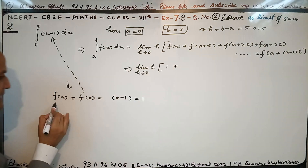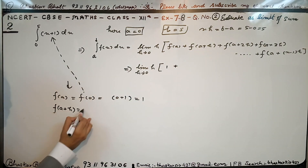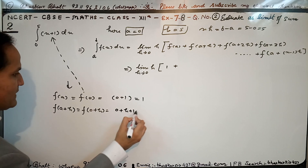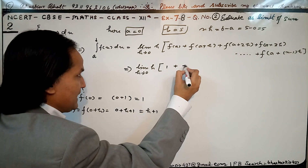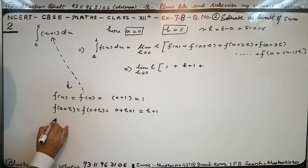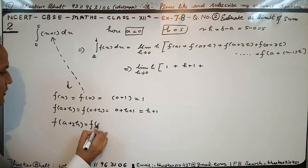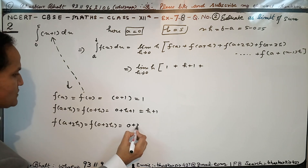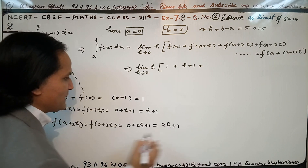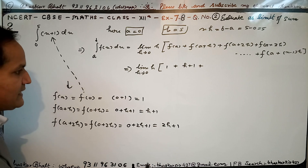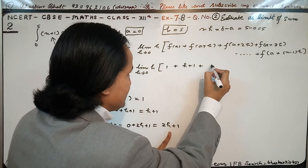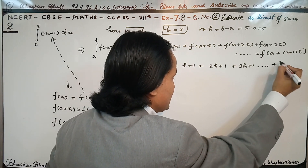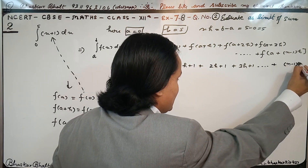f(a+h) = f(0+h): x के place में 0+h रखिए, तो 0 + h + 1 = h + 1। f(a+2h) = f(0+2h): 0 + 2h + 1 = 2h + 1। इसी तरह f(a+3h) = 3h + 1, और finally f(a+(n−1)h) = (n−1)h + 1।